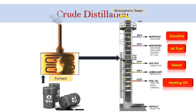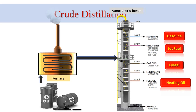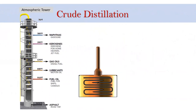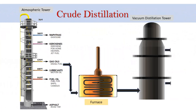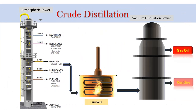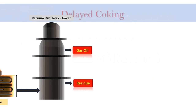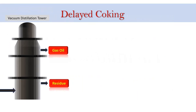The heaviest portion of the crude oil, which cannot be distilled in the atmospheric tower, is heated and sent to the vacuum tower, where it is split into gas oil and residue. The vacuum tower bottom's residue can be sent to be processed further in units such as the delayed coker.